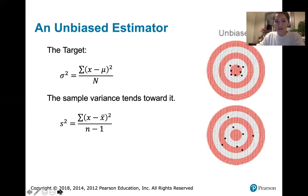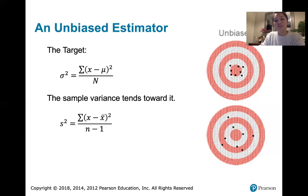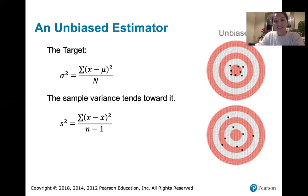The sample variance is computed using a very similar but slightly different formula. We take the mean of the sample, x bar, and subtract it from each x value to get a deviation from the sample mean. We square those deviations so they all count as positive variation, then add them together. In order for this sample variance to actually target the population variance, we need n minus one in the denominator rather than n. That has to do with degrees of freedom — if you have n values in your sample, you can choose n minus one of them freely.